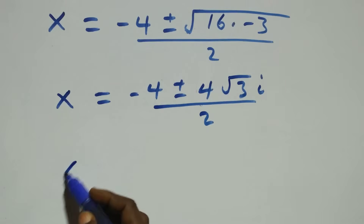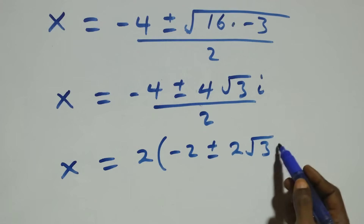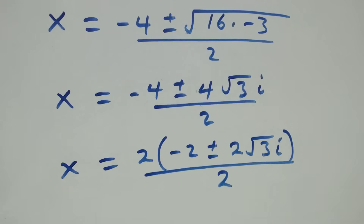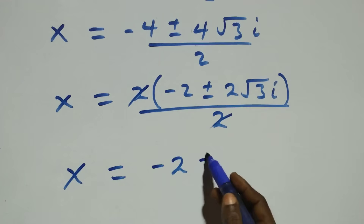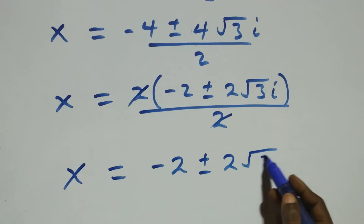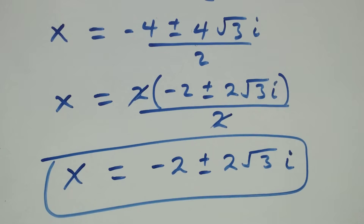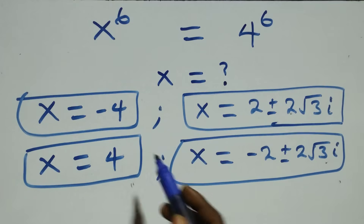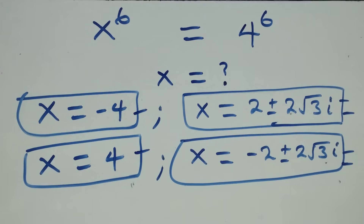Factoring 2 out, we get x equals to minus 2 plus or minus 2 root 3i, which gives two more complex solutions. Therefore, altogether in this problem we have six solutions: two real solutions x equals minus 4 and x equals 4, two complex solutions from the first case, and two complex solutions from the second case. Thank you for watching. Subscribe for more videos, turn the notification bell on, share this video, give a thumbs up, and see you next time. Bye for now.